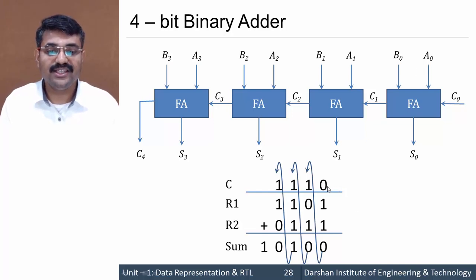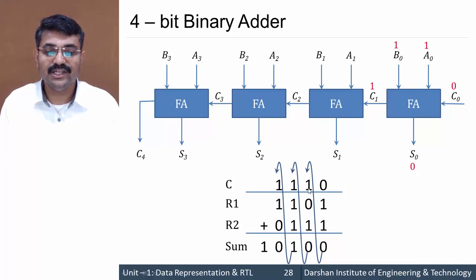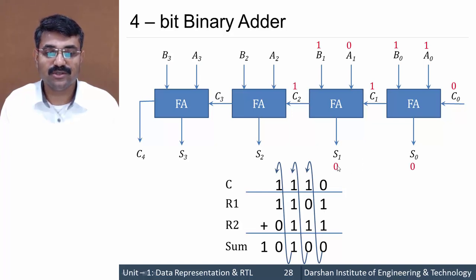In the circuit, the initial carry C0 is 0. From R1 and R2, A0 is 1 and B0 is 1, giving sum 0 and carry 1, which propagates to the next full adder. There, A1 is 0 and B1 is 1, with carry-in 1, giving sum 0 and carry 1, which propagates to the third full adder.